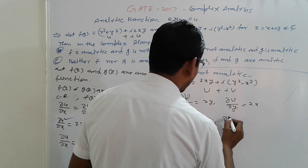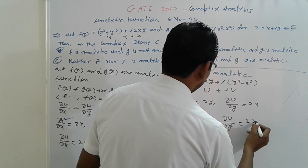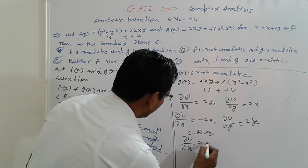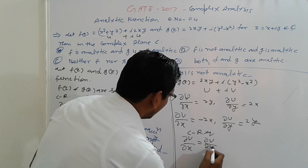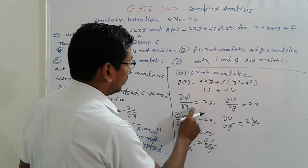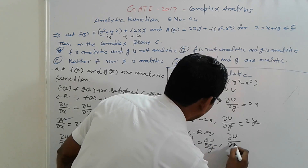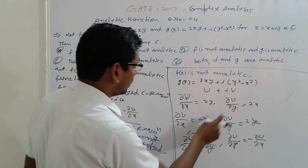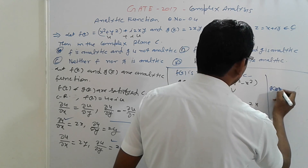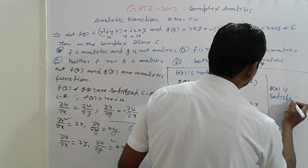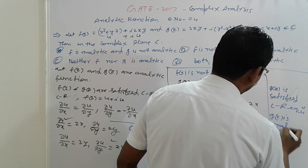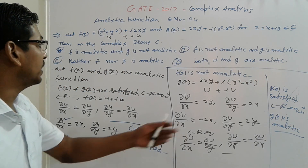And del v / del y = 2y. Checking the CR equations: del u / del x = del v / del y — both are 2y, satisfied. And del u / del y = −del v / del x — both give 2x, satisfied. So g(z) is analytic. That is the analytic property: g(z) is analytic.